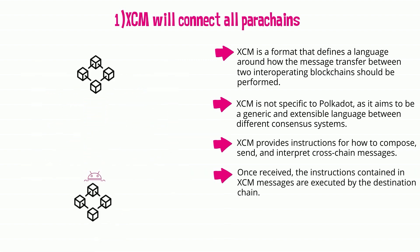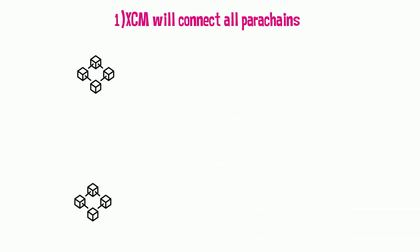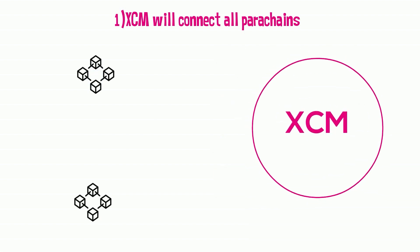Once received, the instructions contained in XCM messages are executed by the destination chain. The two most common use cases for XCM messages, at least in the early stages of its implementation, are asset teleporting and remote transfers.